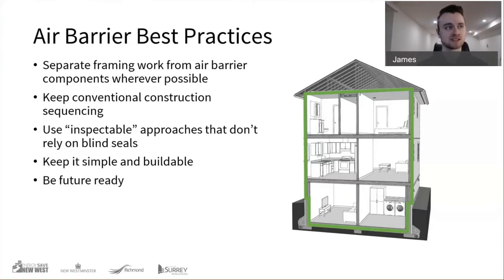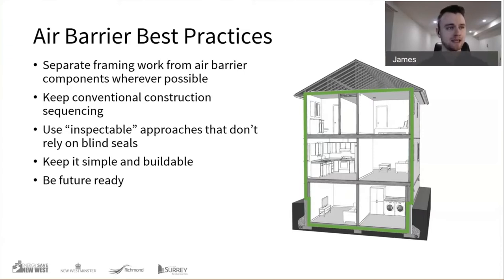Third: relying on reviewable, inspectable airtight approaches — tapes and seals that we can see, not blind seals placed behind large components that can never be viewed again. That's unreliable. Fourth: being future-ready. The concept is getting to a point where we know we can hit air tightness targets and are ready for increased targets — simple and buildable, maybe some mockups — without having to reinvent our air tightness approach every time the code minimum advances to the next step.